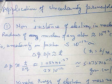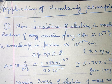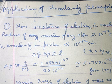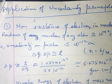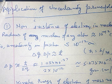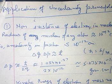The first application we will discuss is the non-existence of the electron in the nucleus. We know that the radius of the nucleus of any atom is of the order of 10 raised to the power minus 12 centimetre. So if an electron is confined within a nucleus, the uncertainty in position must not be greater than 10 raised to the power minus 12 centimetre. So according to the uncertainty principle,